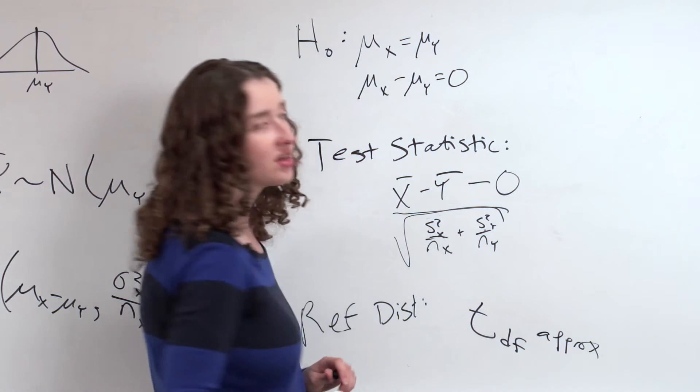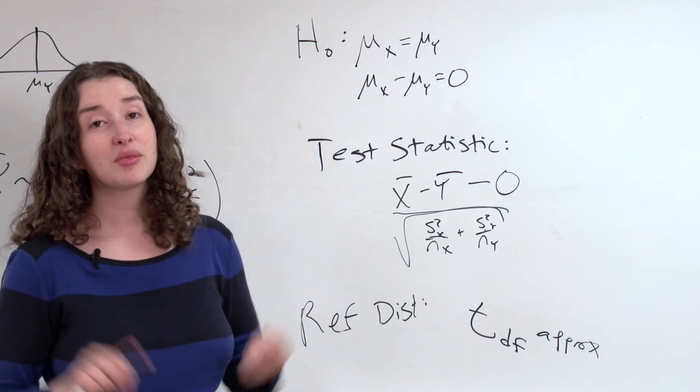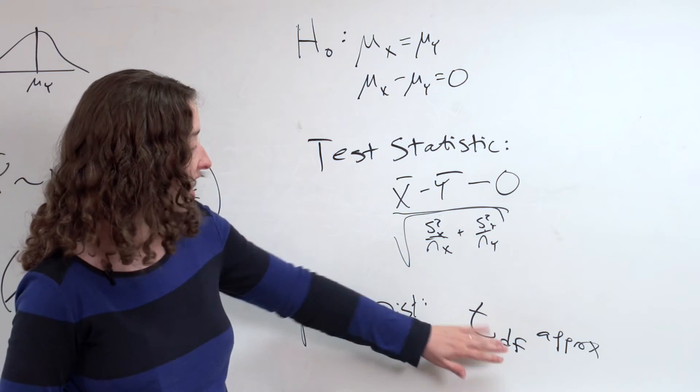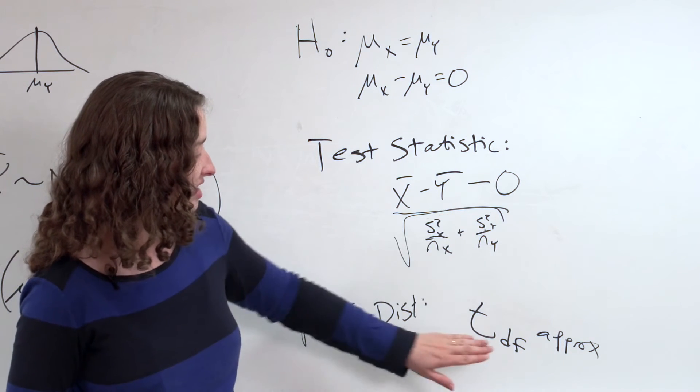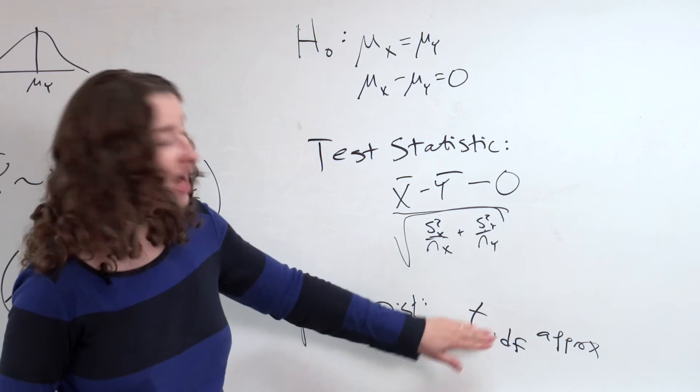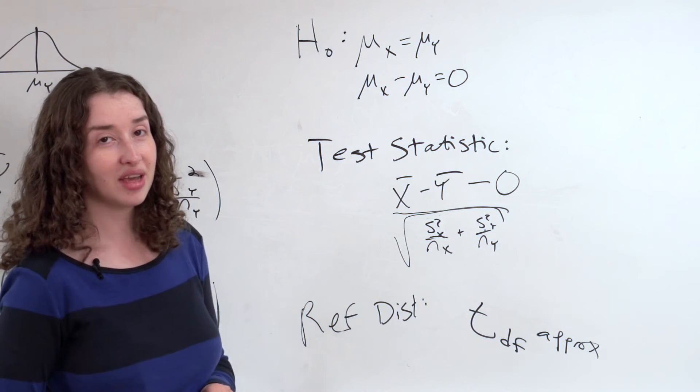What is this degrees of freedom? Well, it's estimated computationally using something called Satterthwaite's approximation, and if you use that, it's a function of the sample sizes and the variances, you get a certain number, and the reference distribution for this thing is approximately that t-distribution.